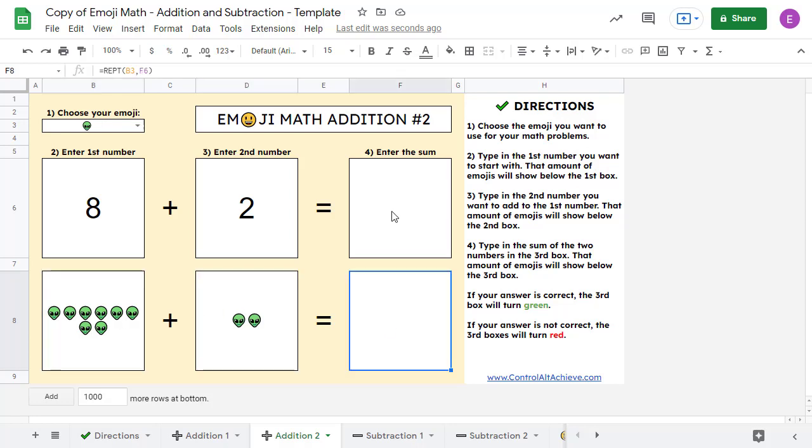On any of the tabs, if the student types in the incorrect answer in the third box, the third box will turn red to indicate that they have entered the incorrect answer. The student will need to look at the emojis again to rework the problem. Once the student types in the correct answer, the third box will turn green to indicate that they have entered the correct answer.